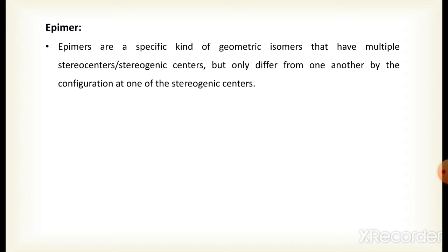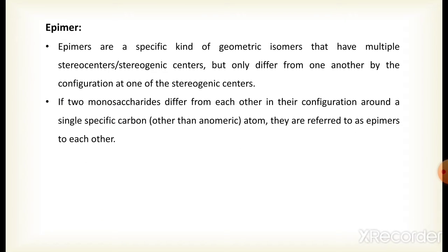The next concept is epimer. What are epimers? Epimers are a specific kind of geometric isomers that have multiple — or more than one — stereocenter or stereogenic center, meaning a carbon atom that has four different atoms or groups of atoms bonded to it.